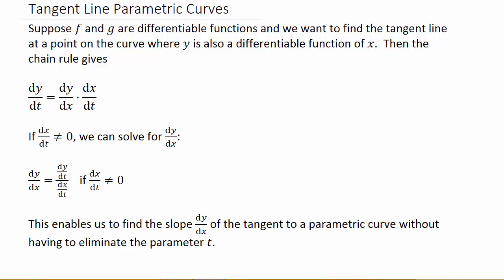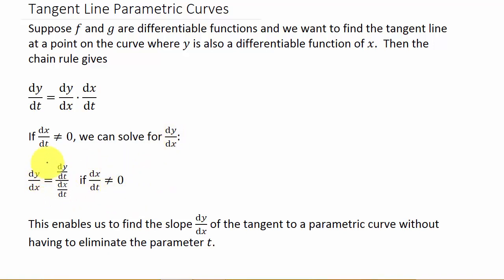Let's look at the second example of finding the tangent line to parametric curves. So f and g are differentiable functions and we want to find the tangent line at a point on the curve where y is also a differentiable function of x. The chain rule gives us dy/dt = dy/dx times dx/dt. And if dx/dt does not equal zero, we can solve for dy/dx: dy/dx = (dy/dt)/(dx/dt). This lets us find the slope of the tangent line without eliminating the parameter t — we keep the derivative in terms of t.